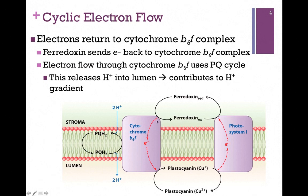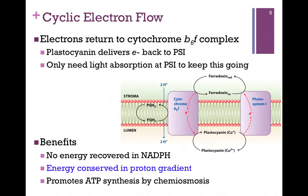The flow of the electrons through Cytochrome B6F is going to involve the PQ cycle, and that's going to contribute to a proton gradient on the luminal side. In order to keep cyclic flow going, we only have photooxidation occurring at Photosystem 1, so we only need light absorption at Photosystem 1 to keep this flow going. The benefit is that we conserve energy in terms of the proton gradient. We contribute to that proton gradient through the Cytochrome B6F complex, and this will promote ATP synthesis.